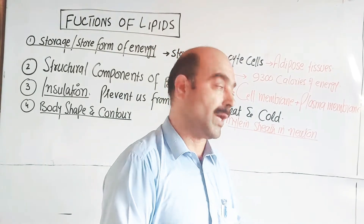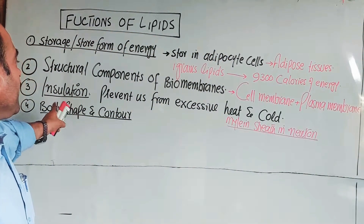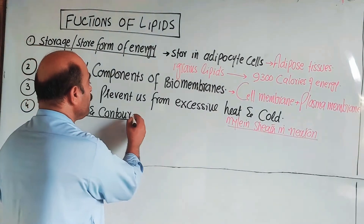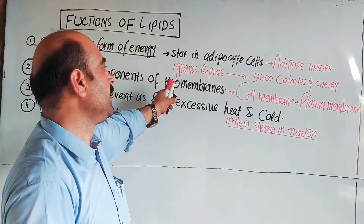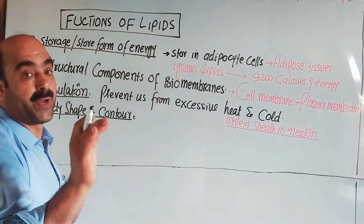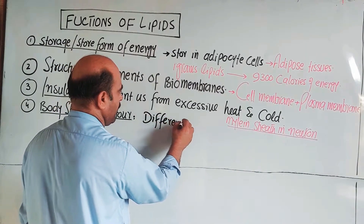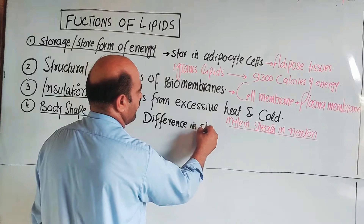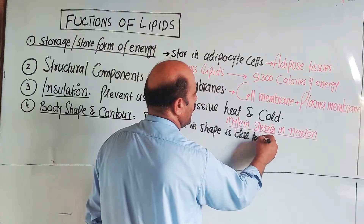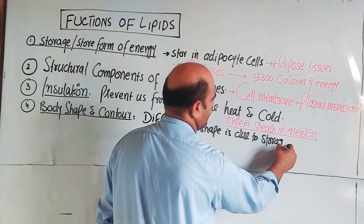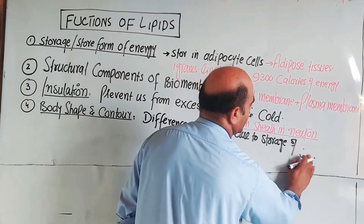The fourth function of lipids relates to body shape and contour. The body's shape and structure is partly determined genetically. Differences in body shape between individuals are due to the storage of fats in different deposits around the body.